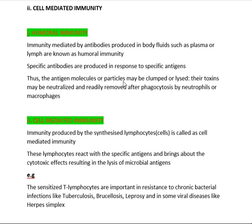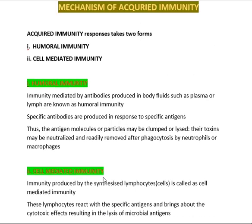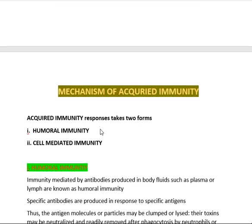The second mechanism of acquired immunity is cell-mediated immunity — immunity produced by the synthesis of lymphocytes. These lymphocytes react with specific antigens and bring about cytotoxic effects, resulting in lysis of microbial antigens. Examples include monocytes and macrophages. Sensitized T lymphocytes are important in resistance to chronic bacterial infections like tuberculosis, brucellosis, leprosy, and viral diseases like herpes simplex virus.